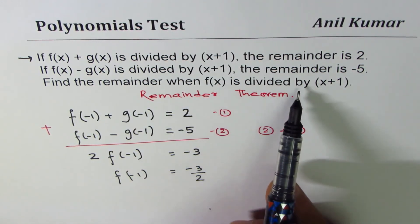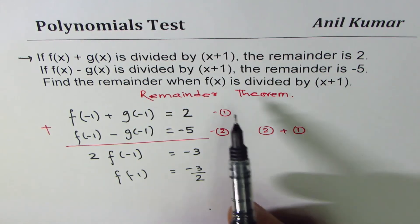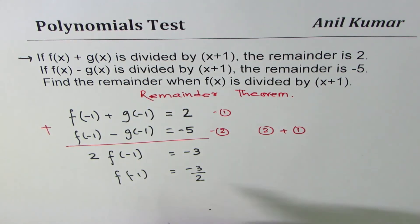So we get our answer and that is remainder is minus 3 by 2. Perfect.